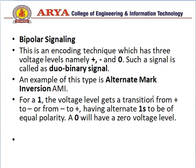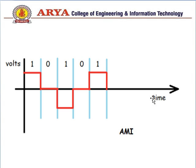Last is bipolar signaling, an encoding technique which has three voltage levels: plus, negative, and zero. Such a signal is called a dual binary signal. An example is AMI (Alternate Mark Inversion), where for a 1 the voltage level alternates between positive and negative, and for a 0 the voltage is zero. In the diagram, the first 1 is positive, 0 has no pulse, the next 1 is negative, and so on — ones alternate between positive and negative.